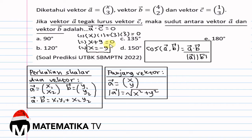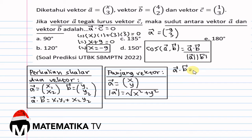Maka Vektor A sama dengan (min 9, 3). Vektor A dot Vektor B sama dengan min 9 kali 4 plus 3 kali 2 sama dengan min 36 plus 6 sama dengan min 30.